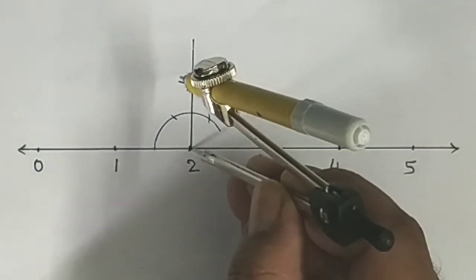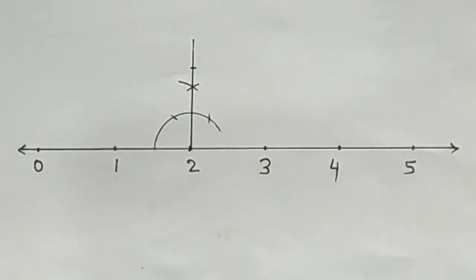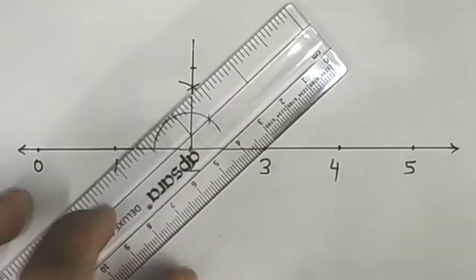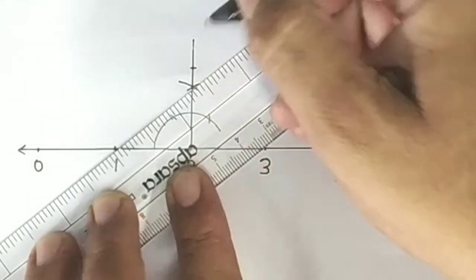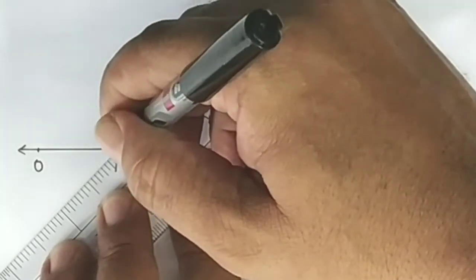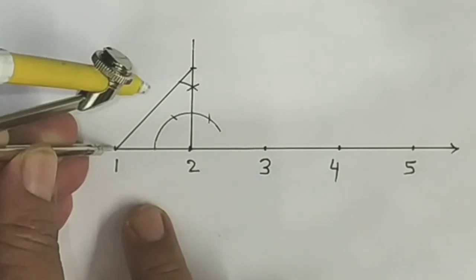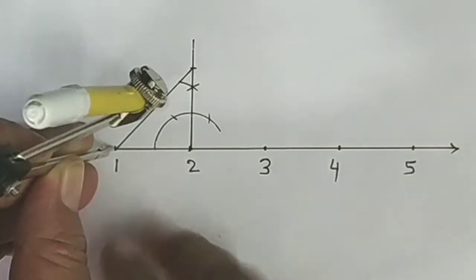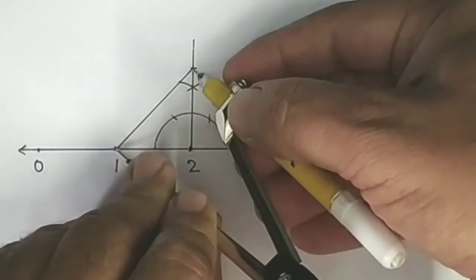Now we cut this and then we will join with 1 unit. This will be 1 unit. This length same as a radius.